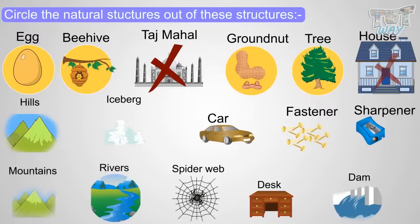House, no. Hills, yes. Iceberg, yes, a natural structure. Car, no, it's a man-made structure.